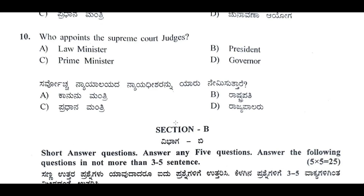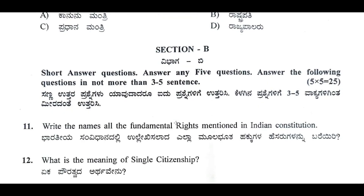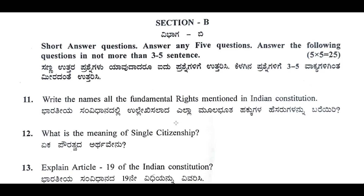Coming to Section B. In Section B we will be having 7 questions. Out of 7 questions, we need to answer any 5. Every answer gets 5 marks, so 5 into 5 equals 25 marks from Section B. For this we need to write short answers and our answer should not be more than 3 to 5 sentences.